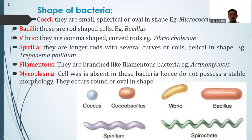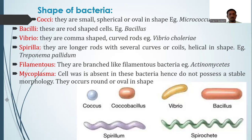When we stain the organism and observe under the microscope, we can determine the shapes of bacteria. Bacteria have different shapes: cocci, bacilli, vibrio, spirilla, filamentous, or mycoplasma. Cocci refers to bacteria that are small, spherical, or oval in shape — for example, Micrococcus, which can always be observed in cocci shape. Bacilli, also called rod shape, are rod-shaped bacteria — for example, the genus Bacillus. Vibrio is a comma shape or curved rod — for example, Vibrio polari.